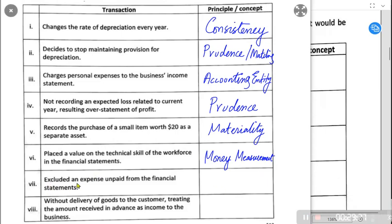Excluding an unpaid expense from the financial statements: just because we haven't paid an expense doesn't mean we shouldn't record it. Even if an expense is unpaid, it should still be recorded. Whenever there is an accrued or prepayment being applied, the concept is the matching concept. Matching concept means income and expenses shall be matched for the same accounting period.